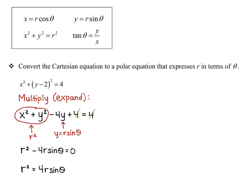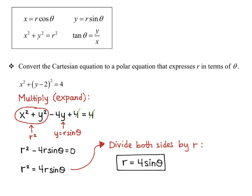Now I have r squared minus four r sine theta equals zero, and I want to solve this for r. So r squared equals four r sine theta. Dividing both sides by r, I get r equals four sine theta. Comparing the two equations: the Cartesian form is a circle with center zero, two and radius two. When I have r equals four sine theta in polar, it's the same shape — a circle with radius two and center zero, two. Just make a mental note of the format of the polar equation for a circle.